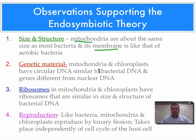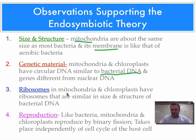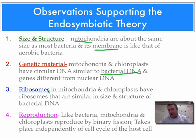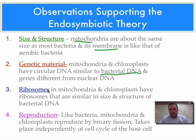The second piece of evidence is genetic material. Chloroplasts and mitochondria both have a bacterial-like DNA, and the genes found in a mitochondrion are totally different from the genes found in the nucleus. Third, the ribosomes: mitochondria and chloroplasts both have their own ribosomes that are more bacterial in their size and structure, and they're actually able to make bacterial-like proteins more easily than nuclear DNA would.